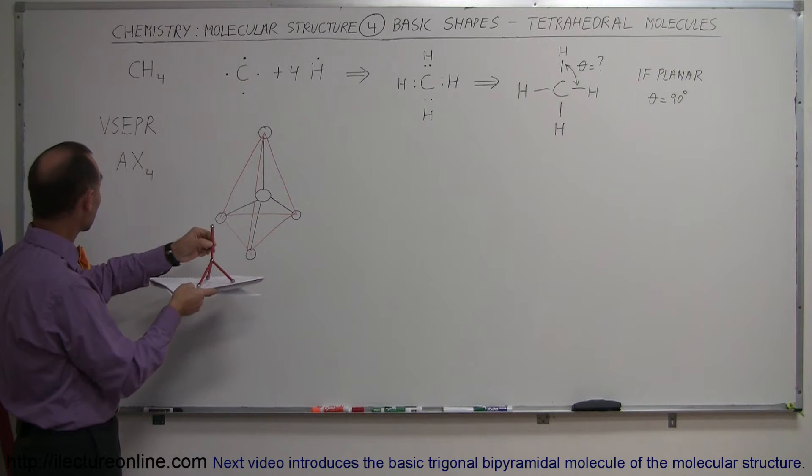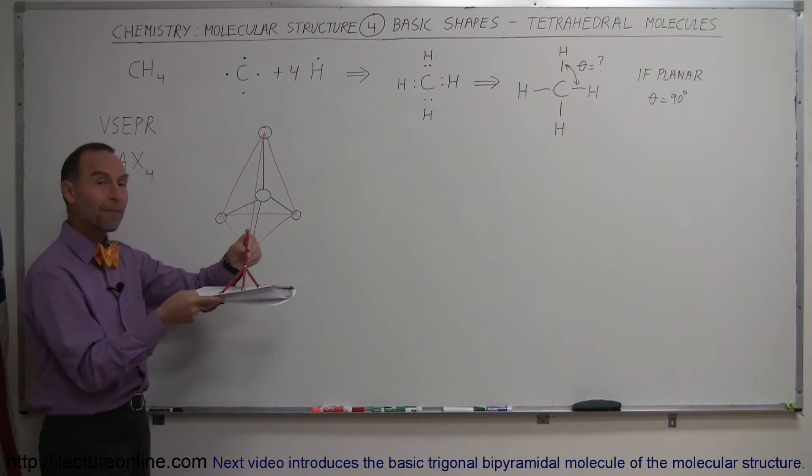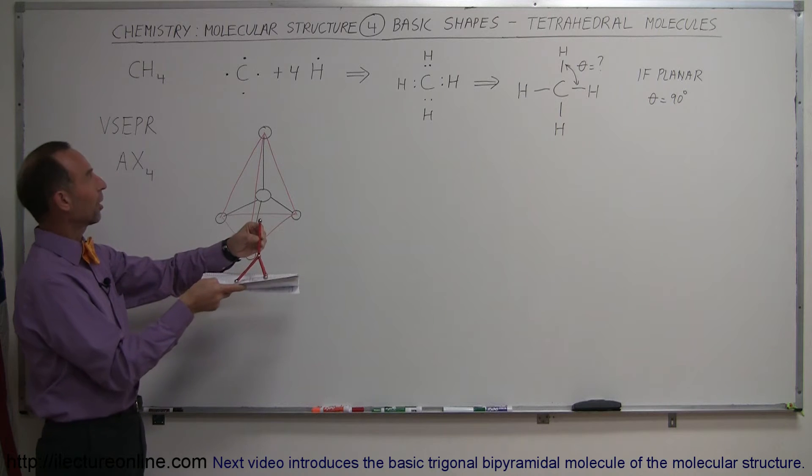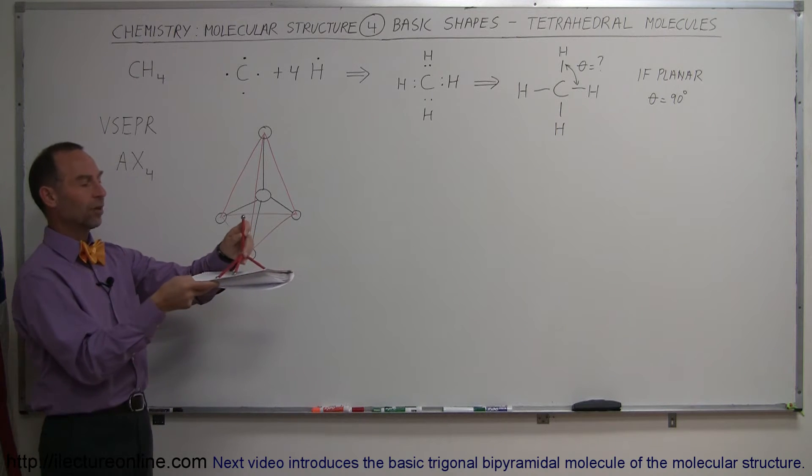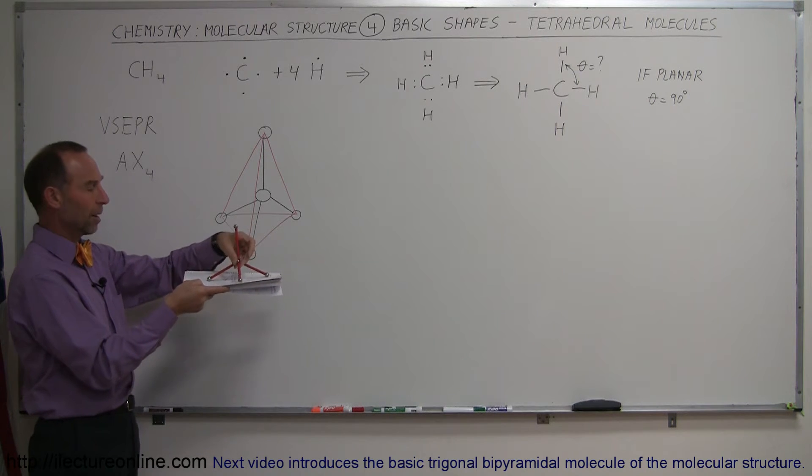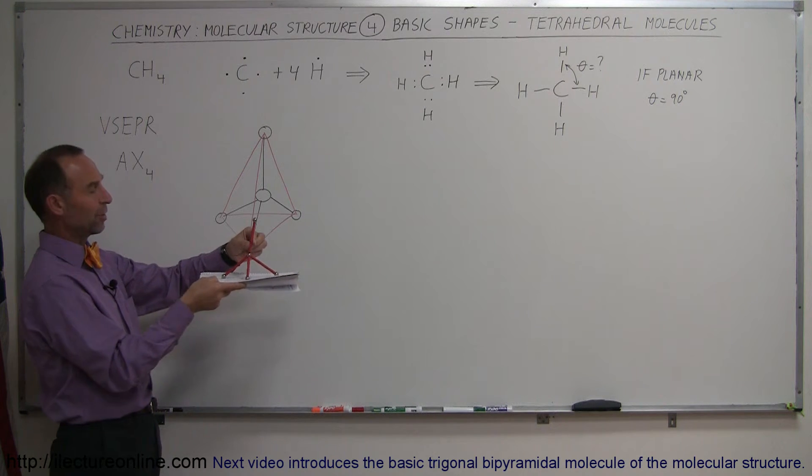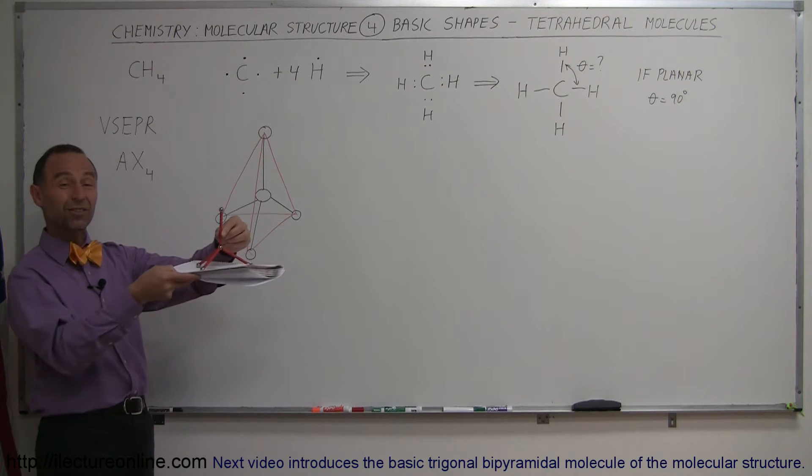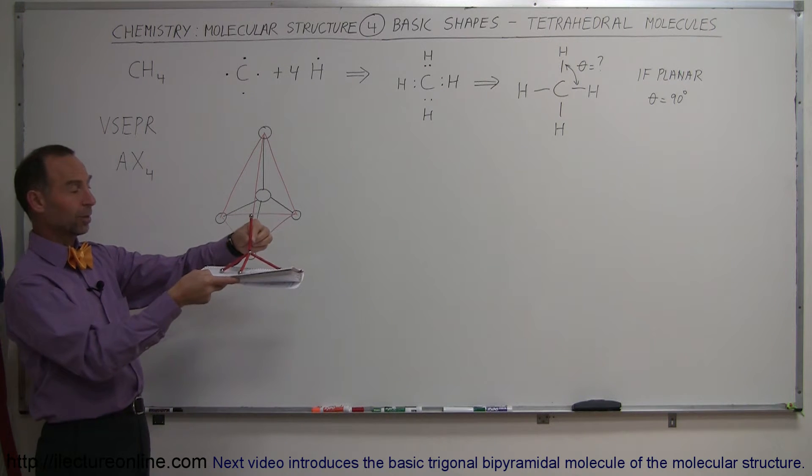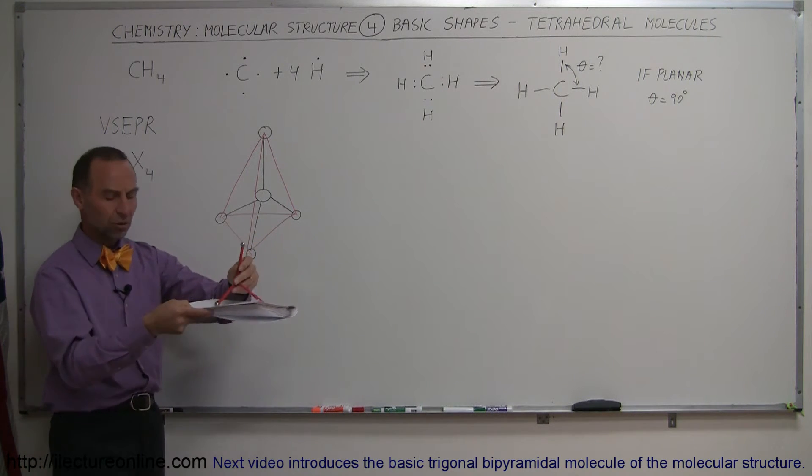This would be a good example of CH4, the methane molecule. One carbon at the center, four hydrogens. They all form a nice bond with two electrons in each bond, and notice that those electrons would like to be as far away from one another as possible. So this is the shape they're going to end up with, something that looks like this. It's called the tetrahedral shape.